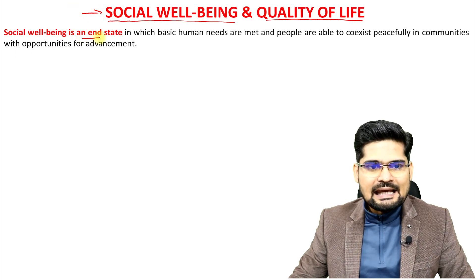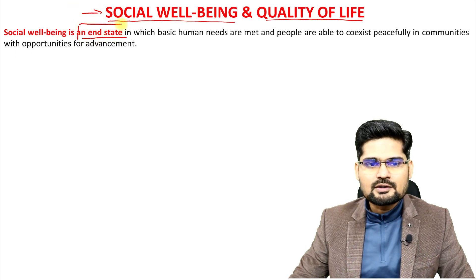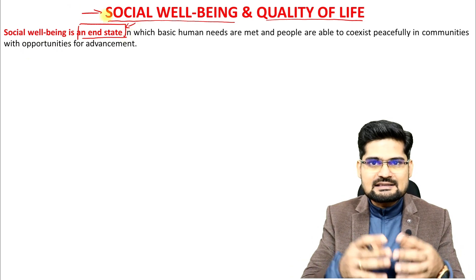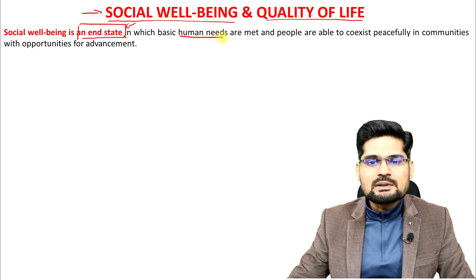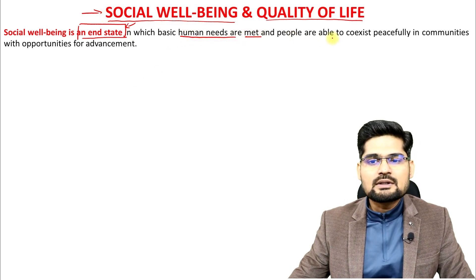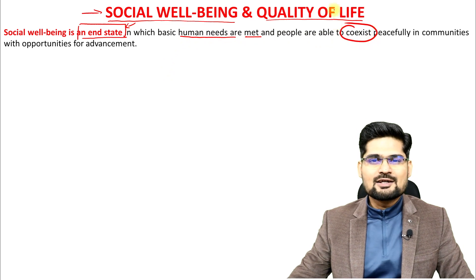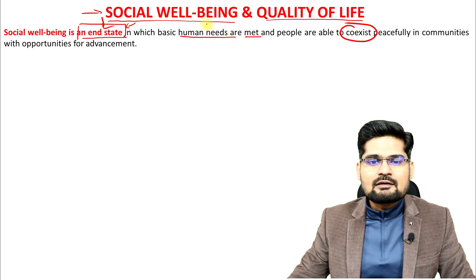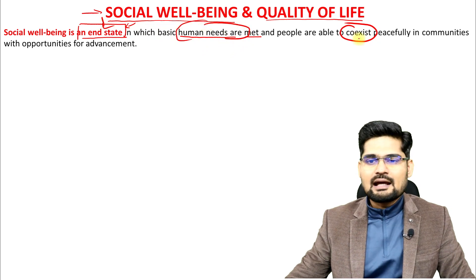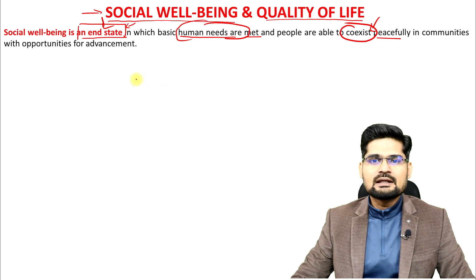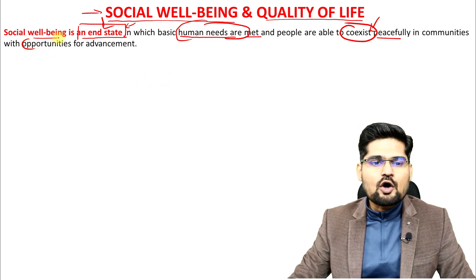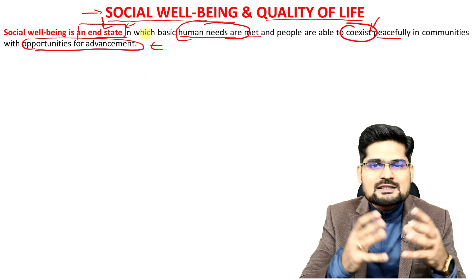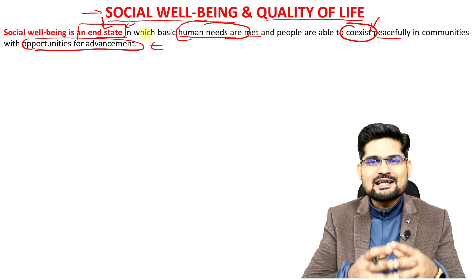Social well-being is an end state. It's very important to understand that it is not the beginning but the result — it's the end state in which the basic human needs are met and people are able to co-exist. Remember the key words: it's the end state where human basic needs are met, there is co-existence of people peacefully in communities, and there are opportunities for advancement.